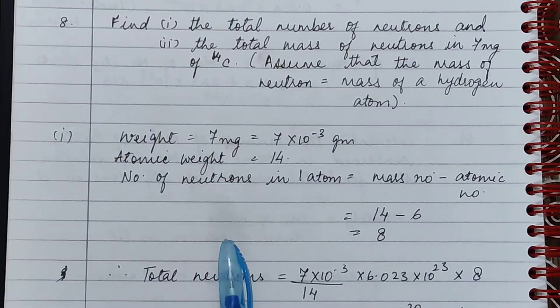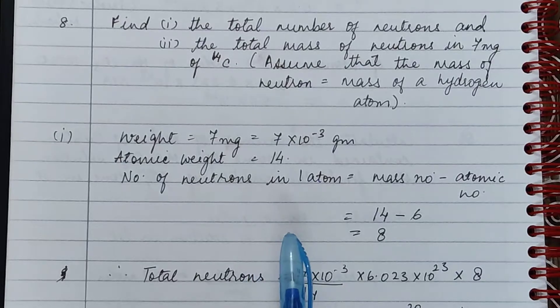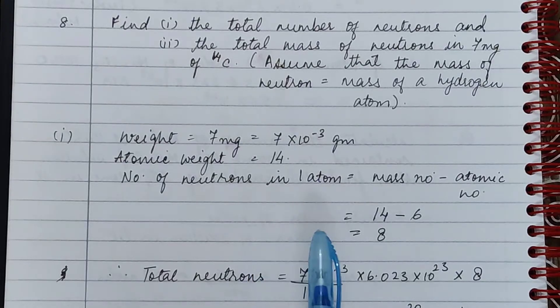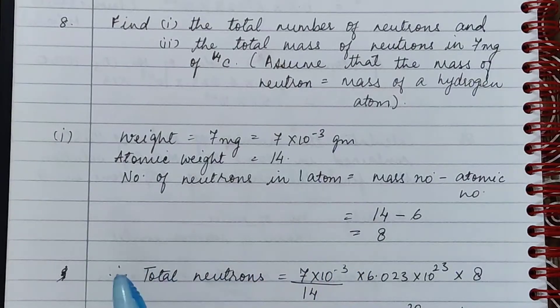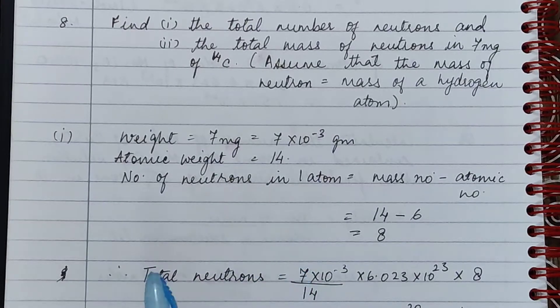The given weight is 7 milligrams, which is equal to 7 into 10 to the power minus 3 grams. The atomic weight is equal to 14.